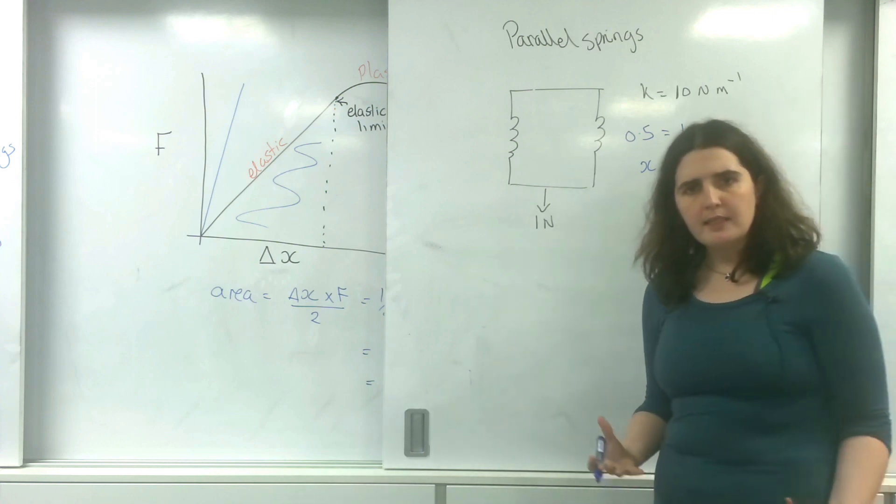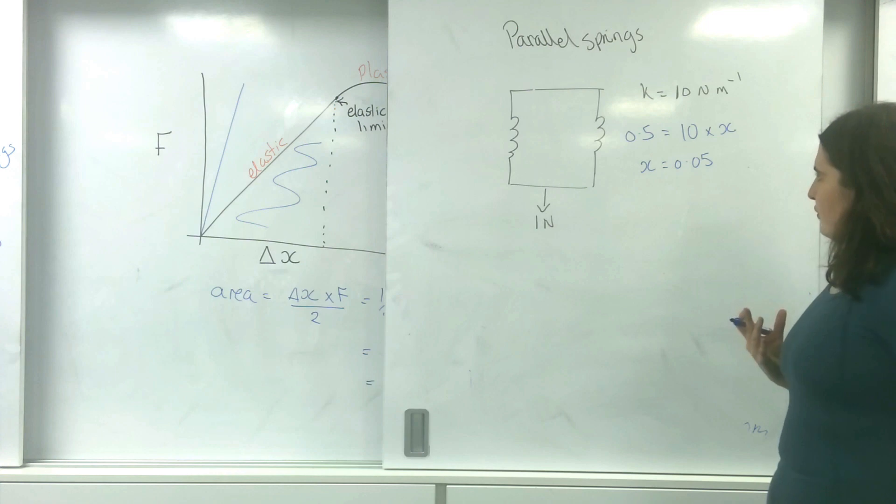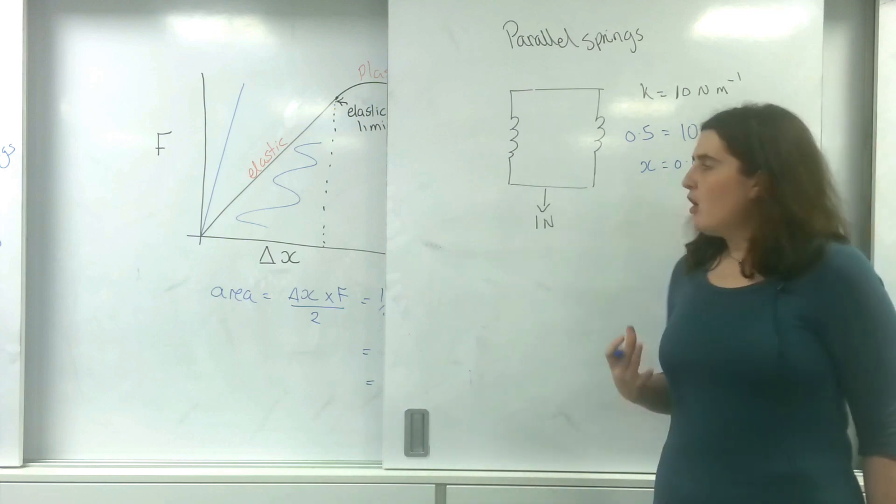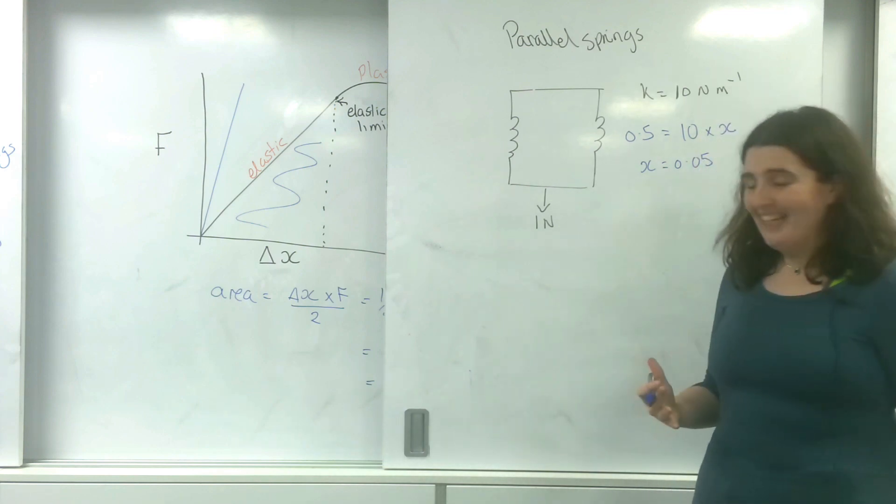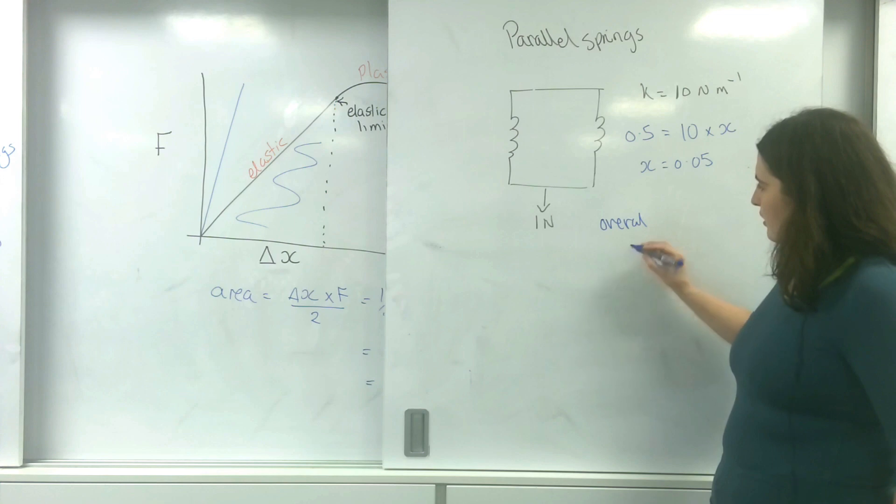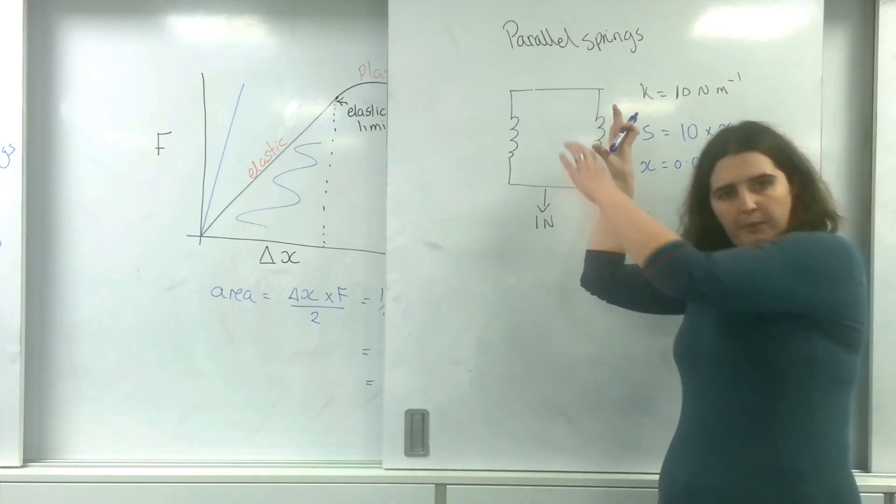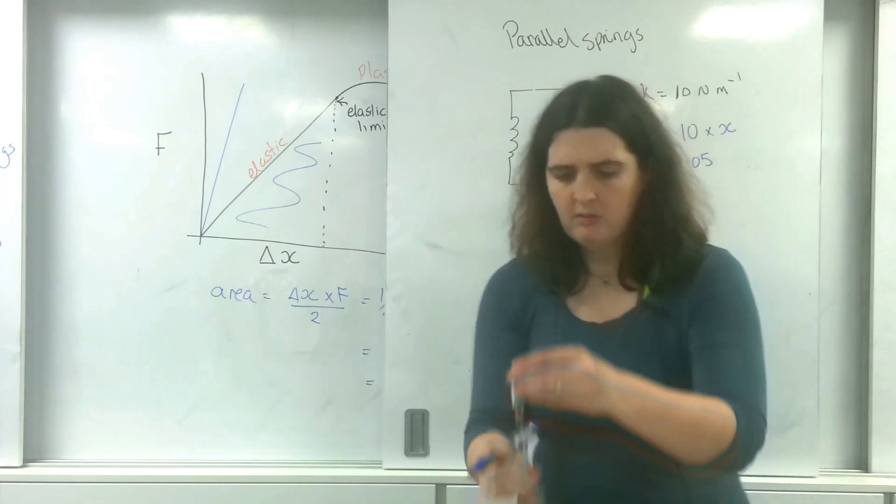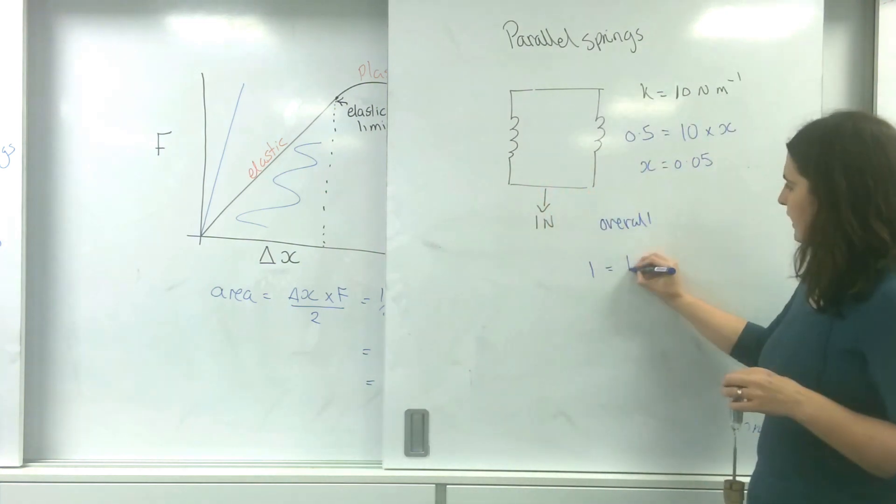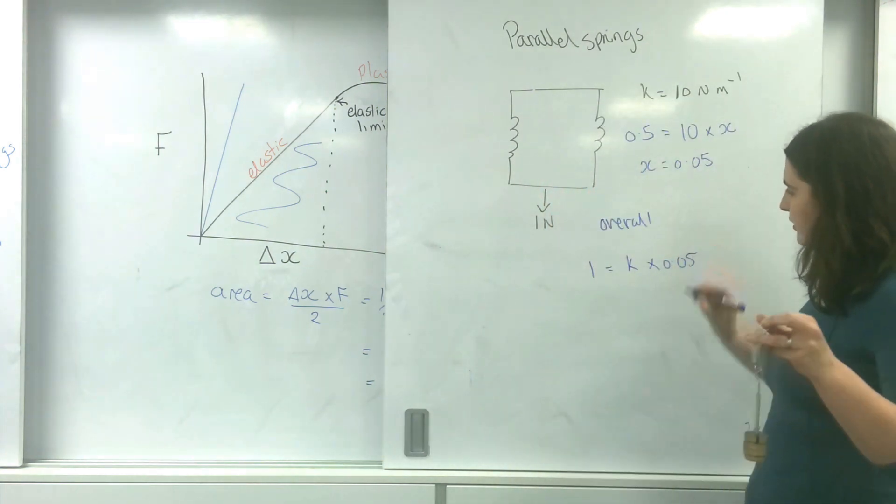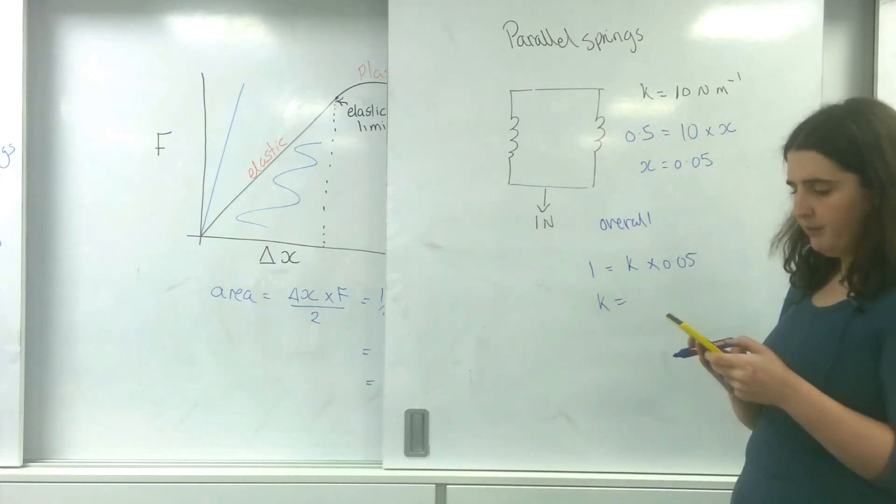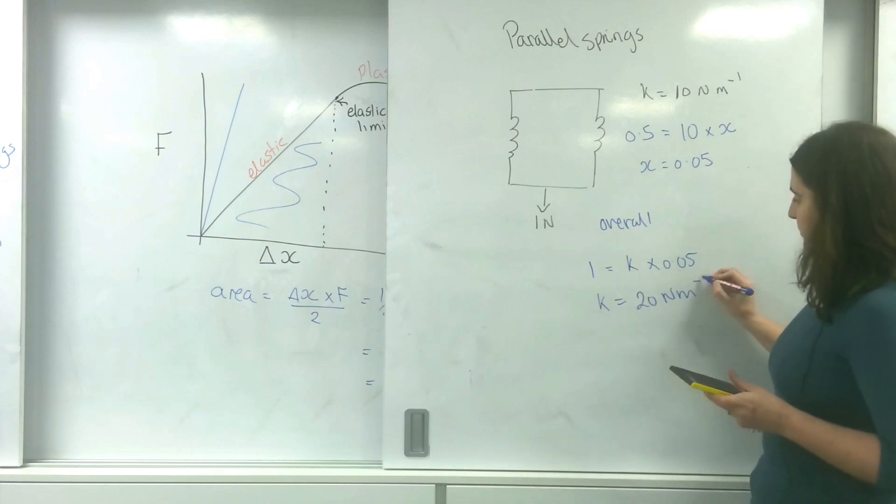Let's find out for the overall system. For the overall system, I'm going to be feeling 1 newton because they're both moving the same amount, but overall my extension is only 0.05. My spring constant here is 1 divided by 0.05. It's 20 newtons per metre.